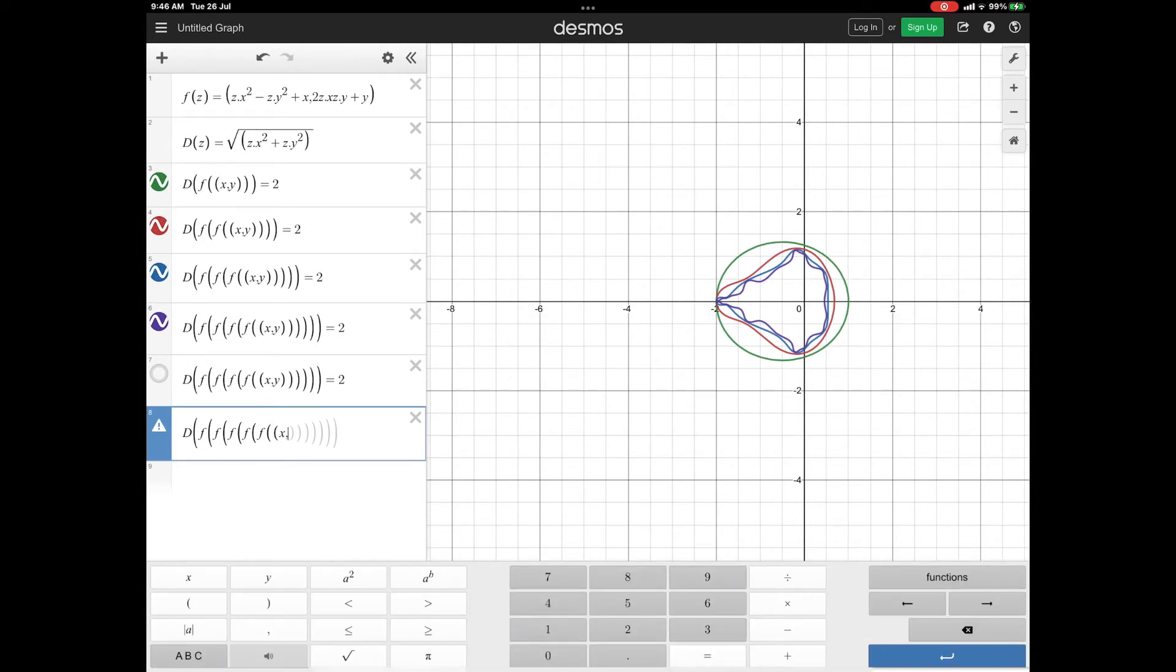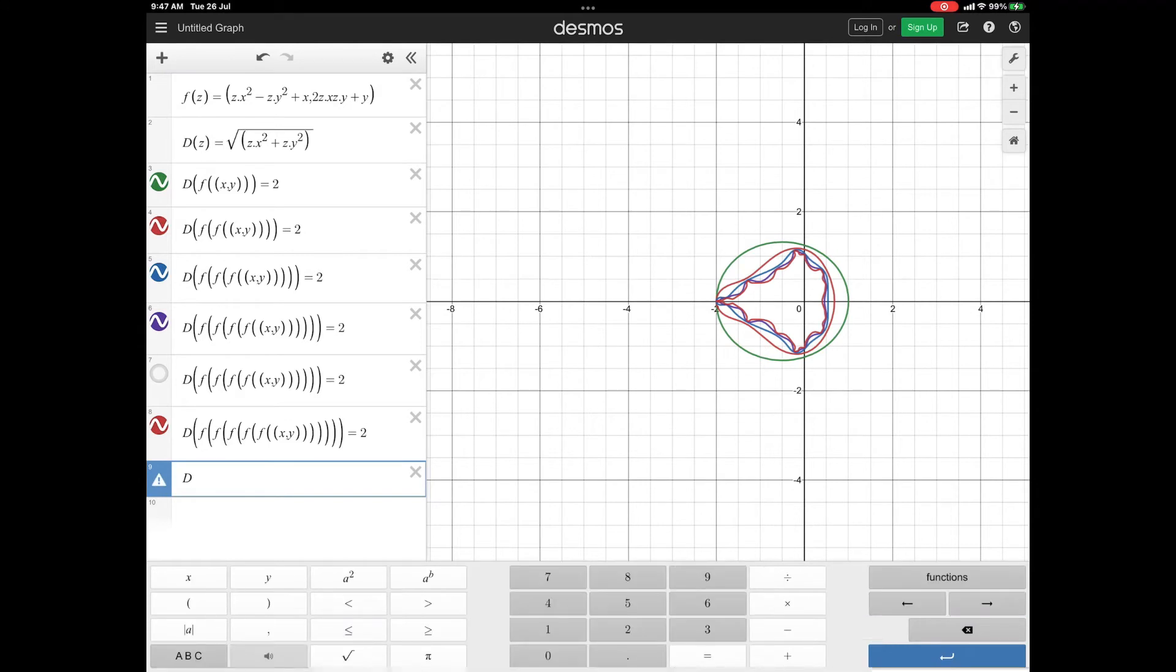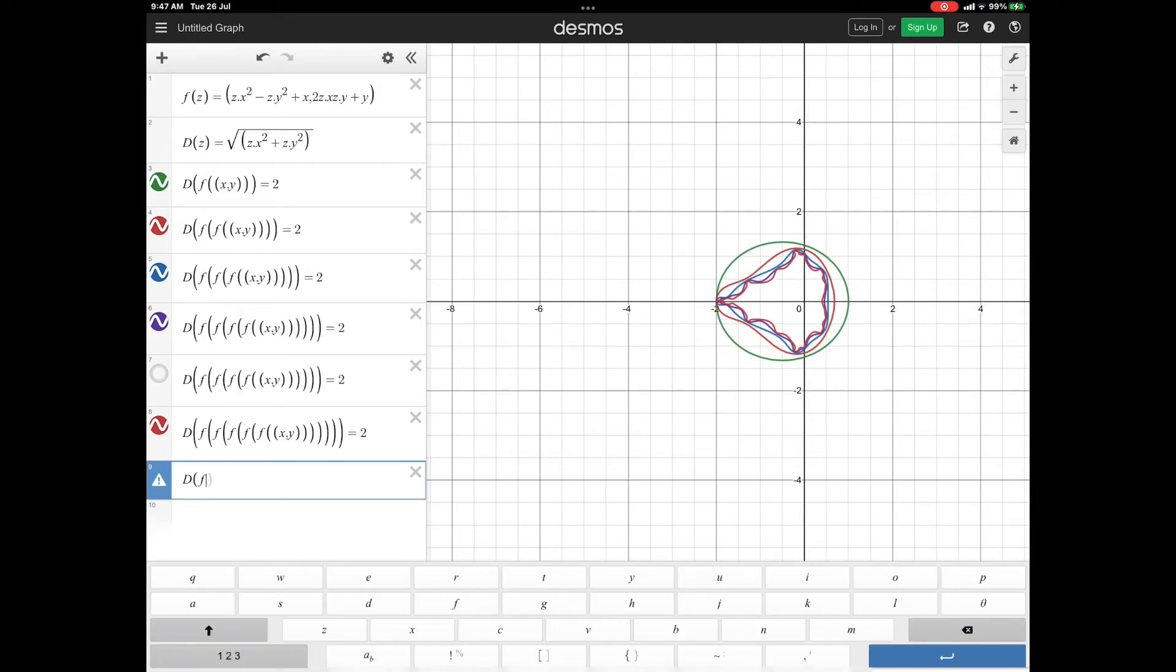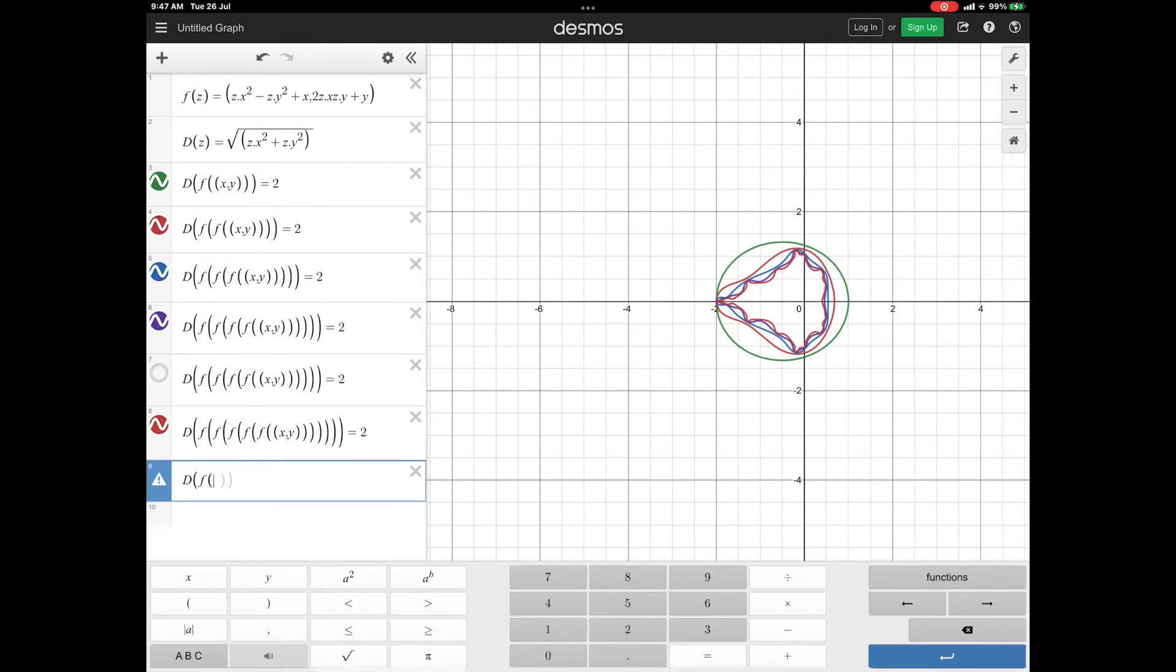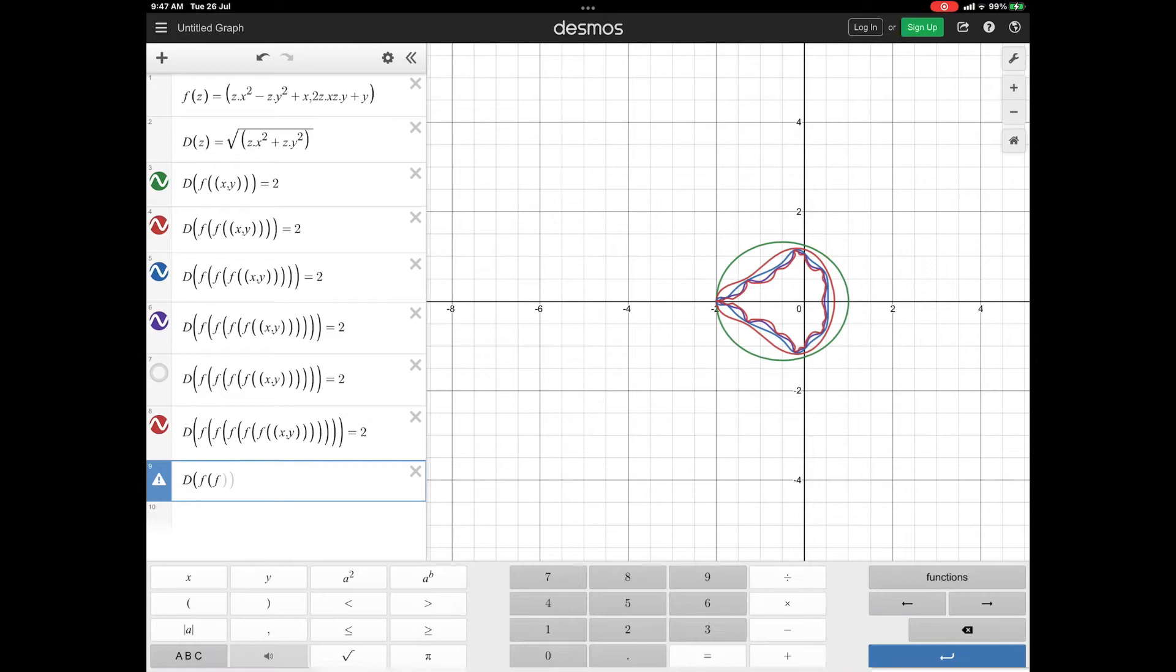So, mathematical fractal is based on an equation that undergoes iteration. The method of doing the same thing again and again is called iteration. So, finally, it has the following features. It has fine structure at arbitrary small scales. It is very irregular to be plotted by a simple Euclidean geometric shape. You can't just write an equation like x square plus y square is equal to 2 or something like that. It is a little complicated and that is the equation which I have shown.